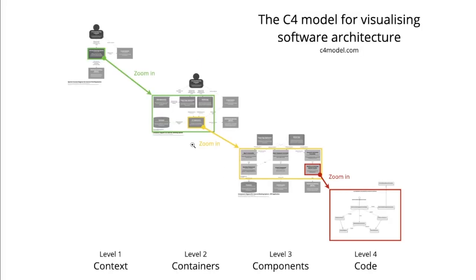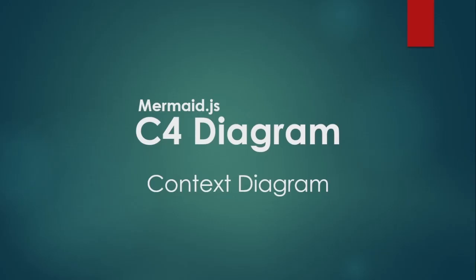The C4 model is a high-level breakdown of the overall system application — from the context, to the container, to the component, and then down to the very code. Let's take a look at C4 context diagrams.